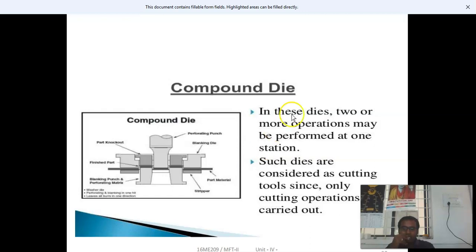In compound dies, two or more operations may be performed at one station. These dies are considered cutting tools since only cutting operations are carried out. Components include the stripper, part material, blanking die, part knockout, and finished part. The blanking punch and perforating matrix enable blanking operations.